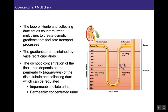We've already learned about the loop of Henle and how it works to establish a profound osmotic gradient within the inner medullary region. The loop of Henle and collecting duct act as countercurrent multipliers to create osmotic gradients. These gradients are maintained by the vasa recta, a countercurrent exchanger. Today we'll learn about vasopressin, a hormone that regulates aquaporin channels within the apical membrane. The osmotic concentration of the final urine depends on the permeability of water through these aquaporin channels of the distal tubule and collecting ducts, which can be regulated by vasopressin.